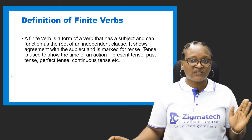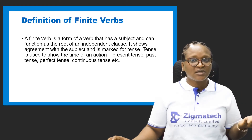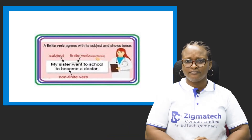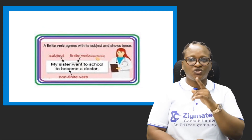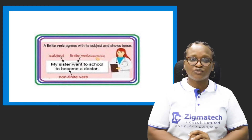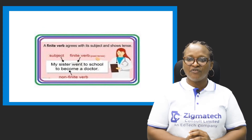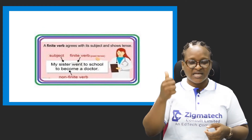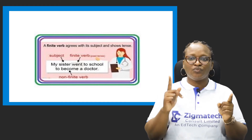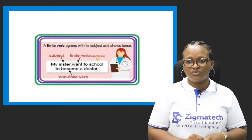Tense is used to show time of an action: present tense, past tense, perfect tense, past perfect tense, present continuous, past continuous. A finite verb agrees with its subject and shows tense. For example: 'My sister went to school to become a doctor.' The subject is 'sister' — one person — and the finite verb is 'went' because it shows past tense. The verb 'become' is non-finite because it doesn't show tense and has the preposition 'to' before it.